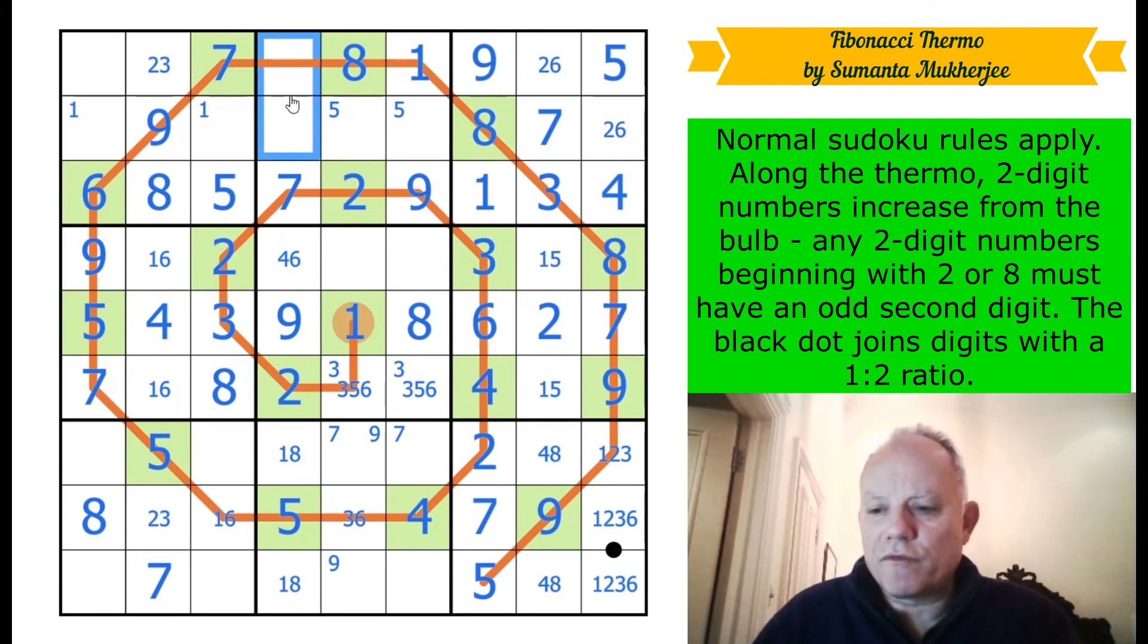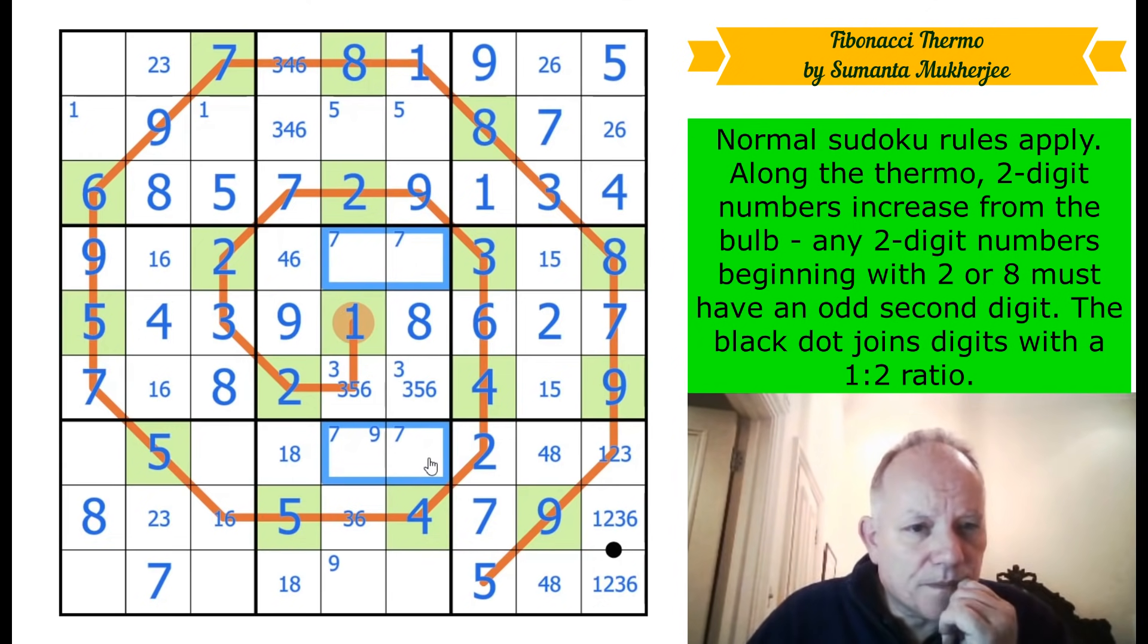One, six pair. One, five pair. No, I don't see how to use that. Six, nine, five, seven, eight. Is it this crop key dot? Can it be three, six? Then it would form a three, six pair there. We'd have one and two there.